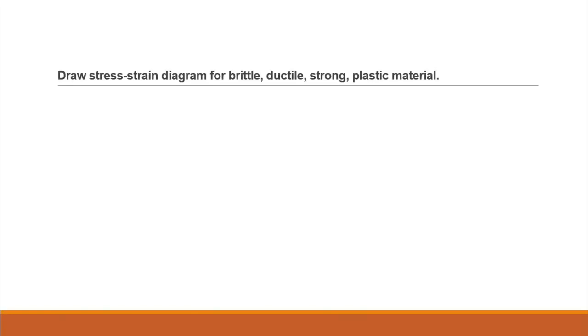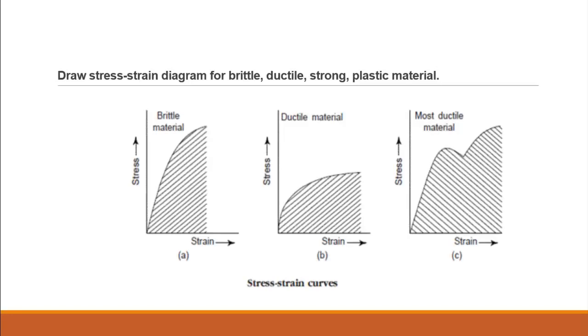Now draw a stress history diagram for brittle, ductile, strong, and plastic material. Here we see the brittle material, ductility is very low and becomes broken down very fast. Then ductile material and then most ductile material.